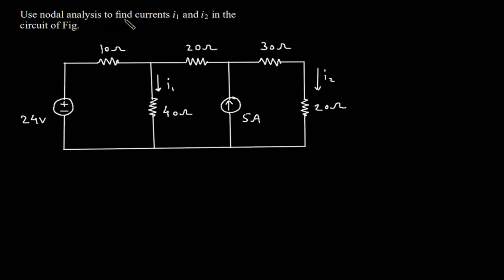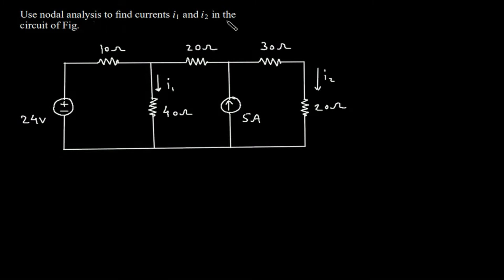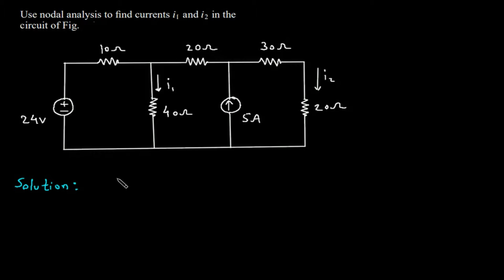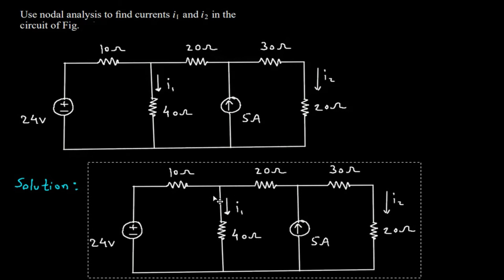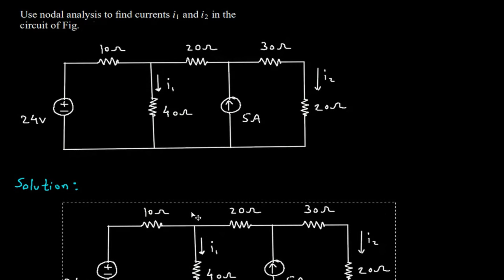Use nodal analysis to find currents I1 and I2 in the circuit of the figure. We have to find I1 and I2 in this circuit. First, we will redraw the circuit.